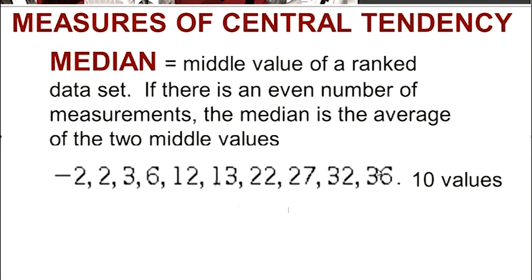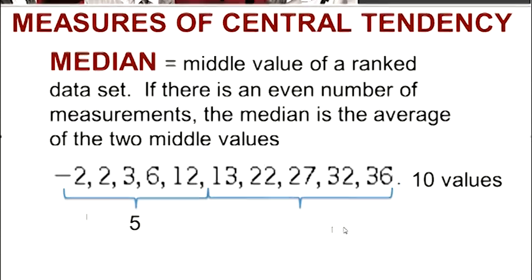So the middle value, there are 10. So the middle value would be between items 5 and 6, so that there's 5 on the left and 5 on the right of the median. So in this case, the median is between 12 and 13.